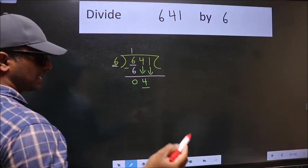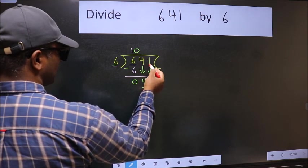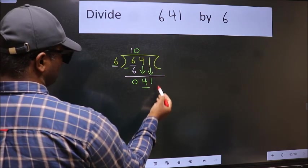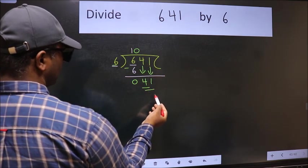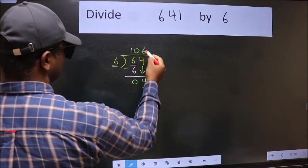And the rule to bring down the second number is we should put 0 here. Then only we can bring this number down. Now 41. A number close to 41 in the 6 table is 6 times 6, 36.